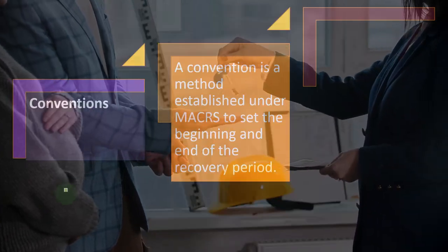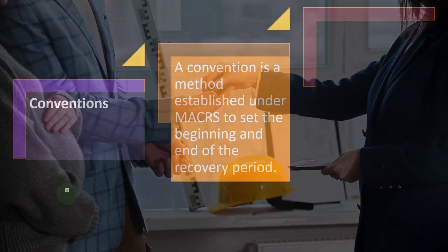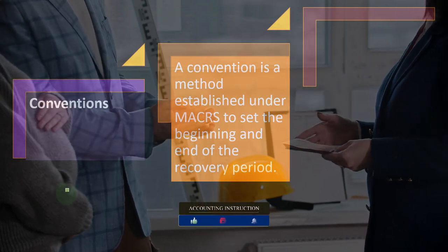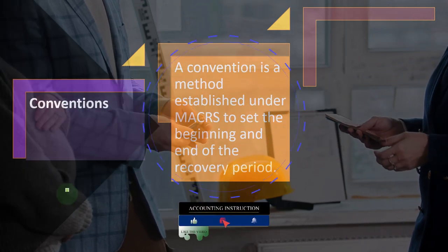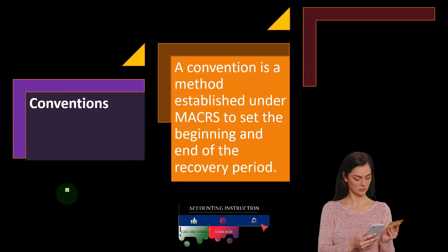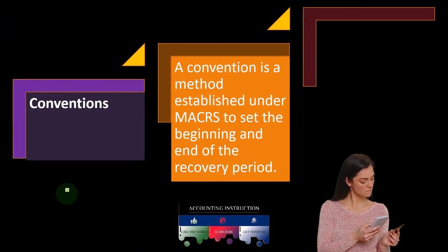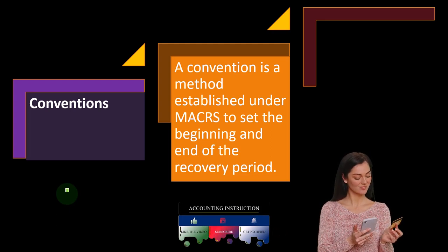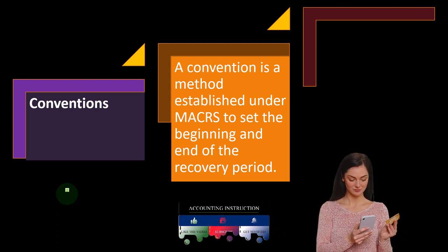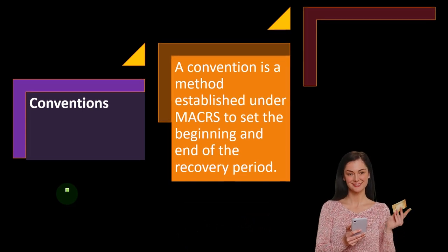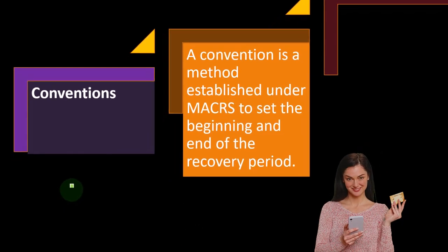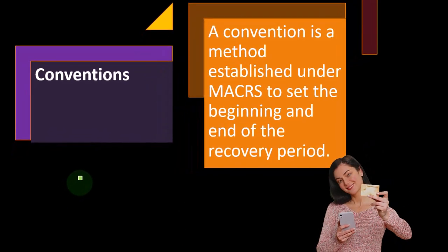We're continuing our discussion of depreciation, which is of course a huge topic with rental property because the cost of the rental property is going to be a huge component. We would like to be able to deduct the cost when we pay for it up front, but the tax code doesn't let us do that even if we're using a cash-based system — they make us put it on the books as an asset.